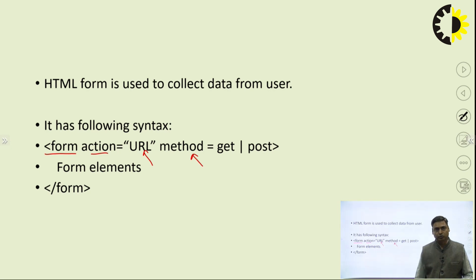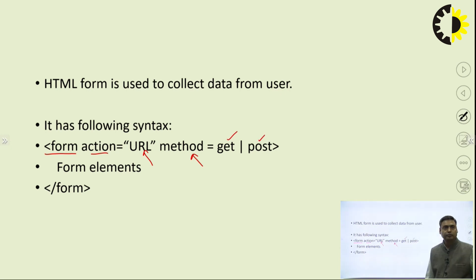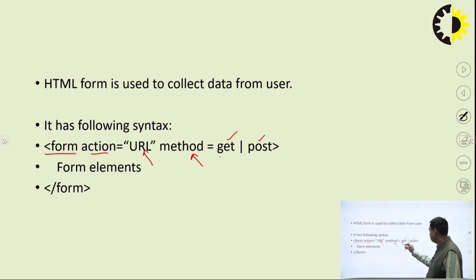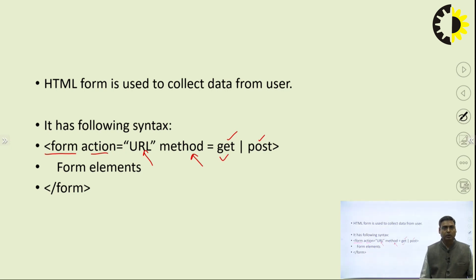There are two methods to send data to the server. One is GET and the second is POST. When you send data with the help of the GET method, the data will not be secure — it will be visible on the URL.